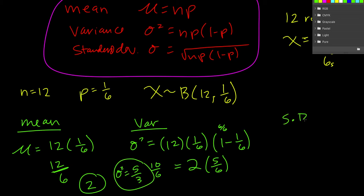So sigma squared is 5 thirds. So if we find the standard deviation, we're just going to square root both sides. And so it's the square root of 5 thirds.